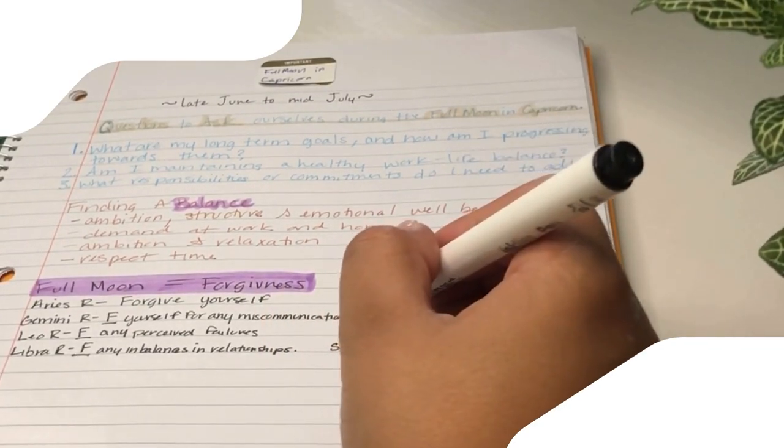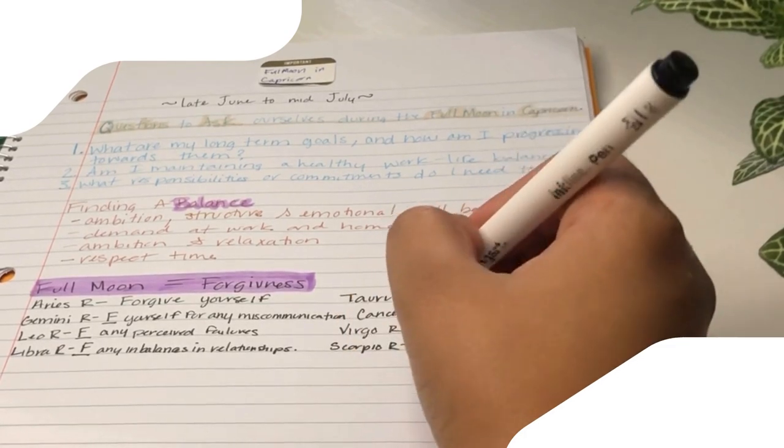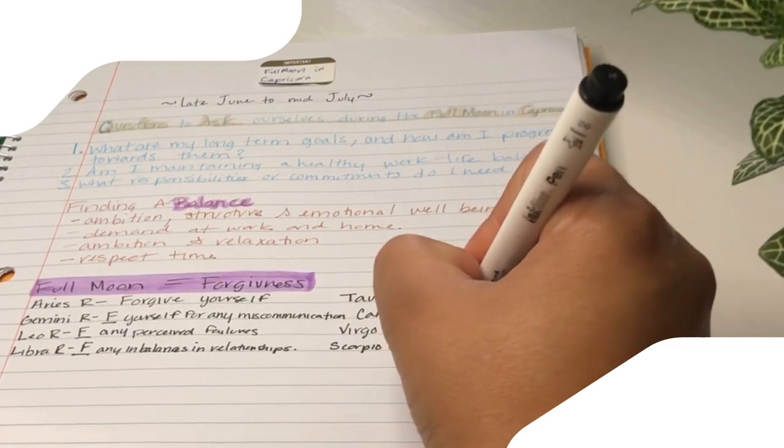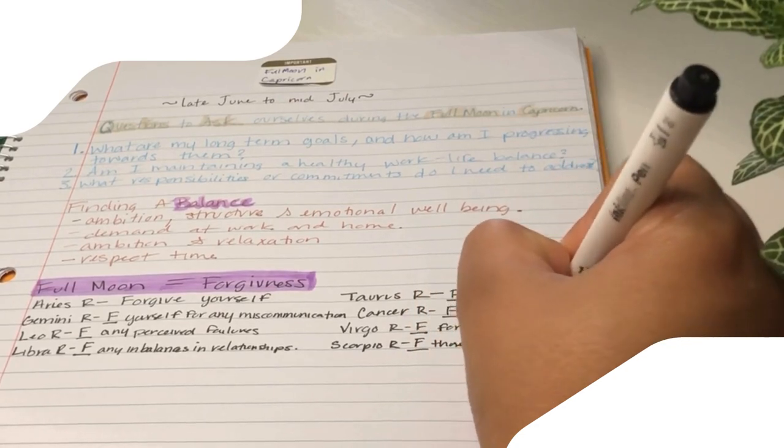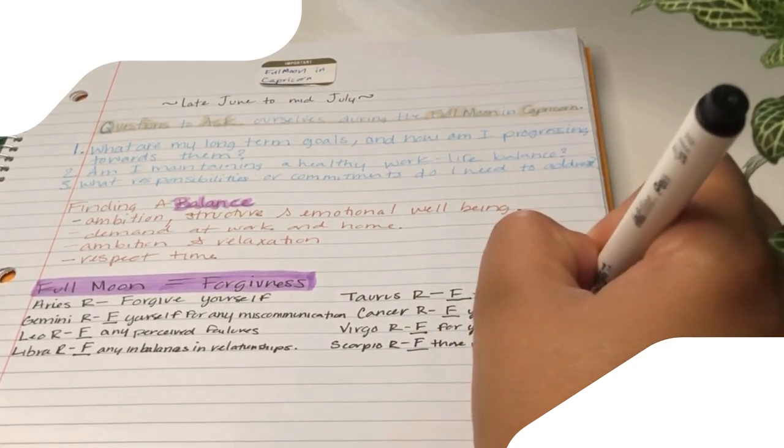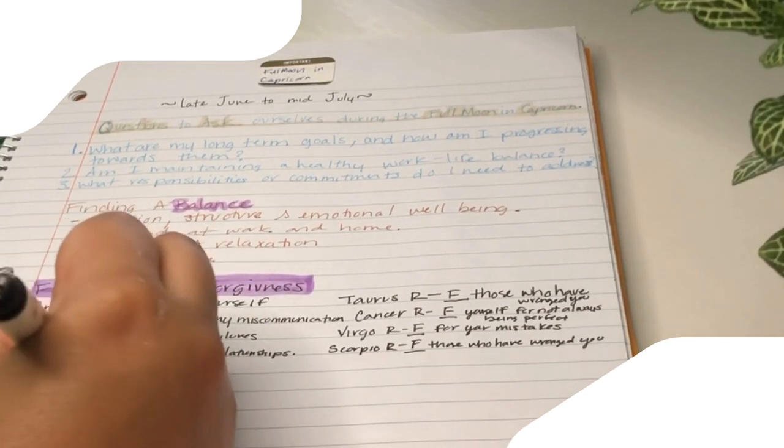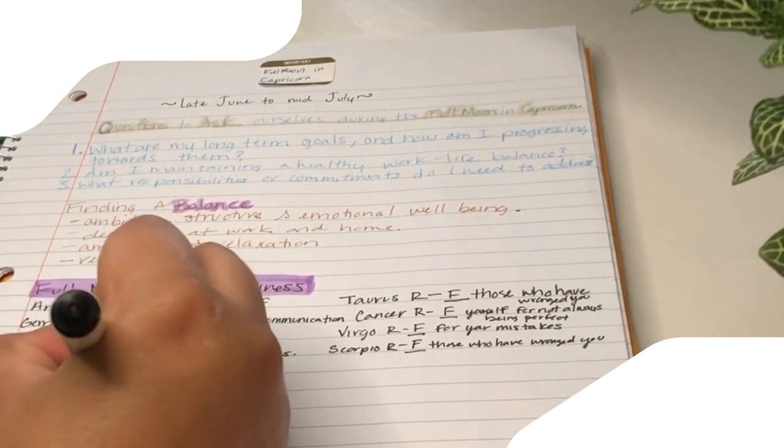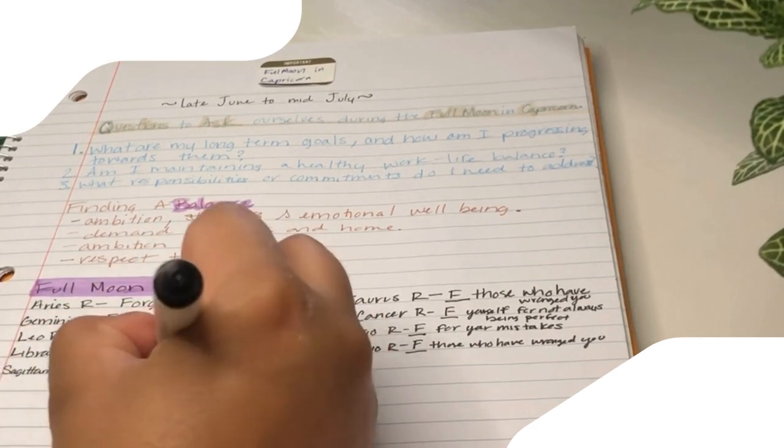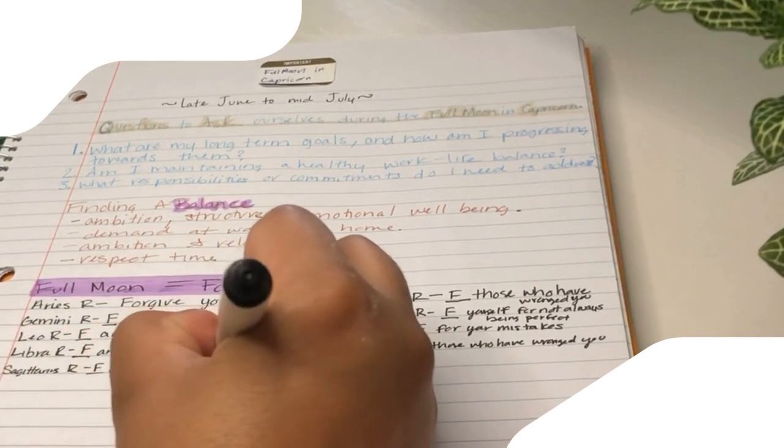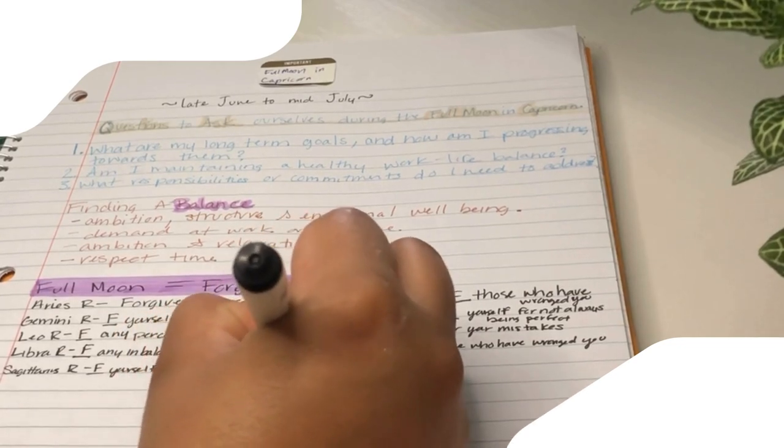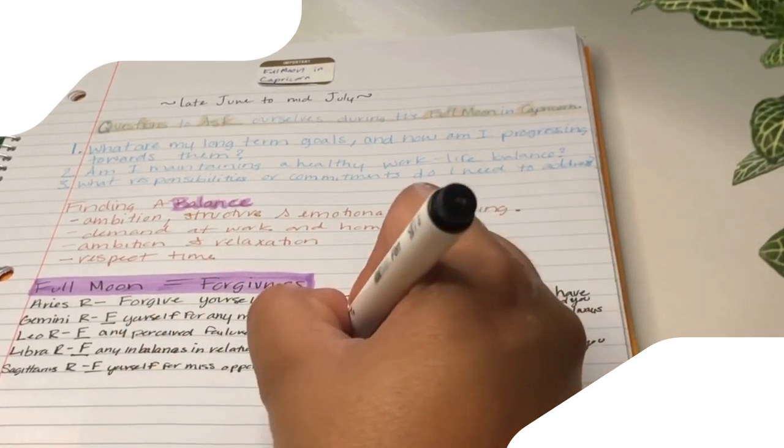When the full moon illuminates this grounded earth sign, it invites us to acknowledge our achievements, appreciate our hard work, and set intentions for continued growth and success. This is a powerful moment to recognize the structures and systems that support us, both in our personal lives and in the broader societal context.